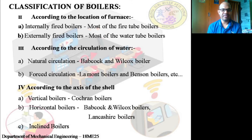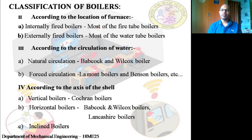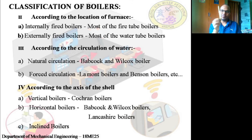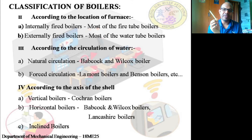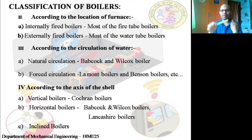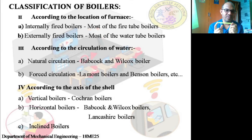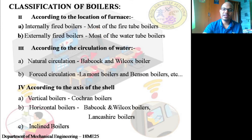The fourth classification is according to the axis of the shell. A home water heater is placed vertically — those are vertical axis boilers, for example the Cochran boiler. Lancashire and Babcock-Wilcox boilers are mounted horizontally — those are horizontal axis boilers. If mounted at an angle, they are inclined boilers.